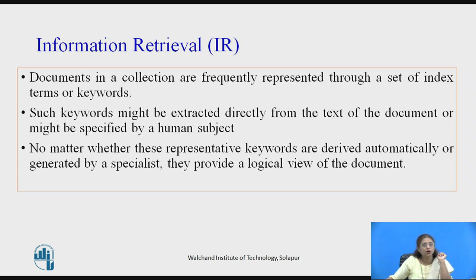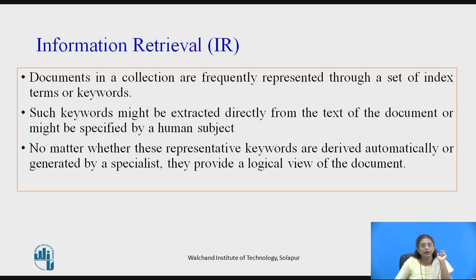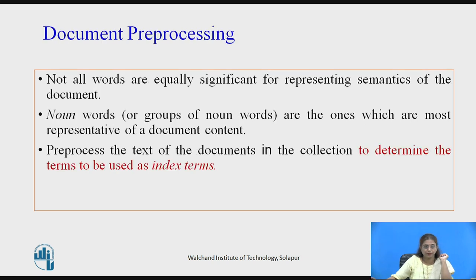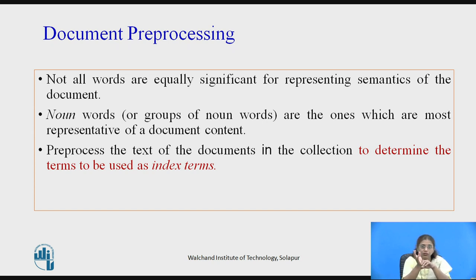These keywords can be extracted from the documents automatically or by human subjects. But currently the collection is too huge and the database is too large, so we cannot do it manually — it is going to be done automatically. Whatever the process, what it provides us is the logical view of the document. In document preprocessing, not all words are equally significant for representing the semantics of the document. Generally, noun words or groups of noun words are most representative of the document content.